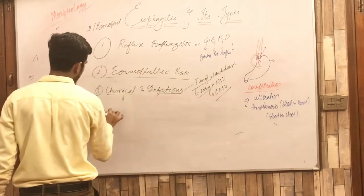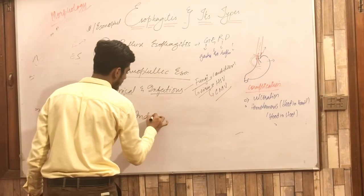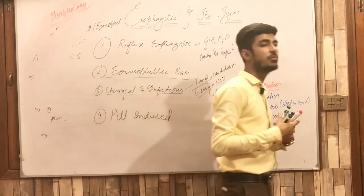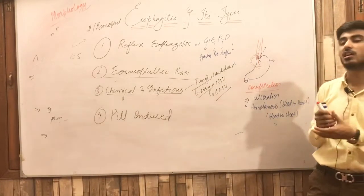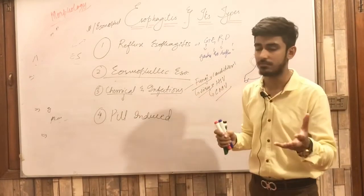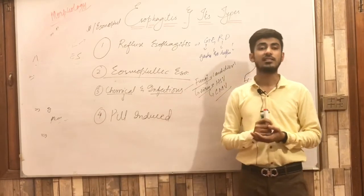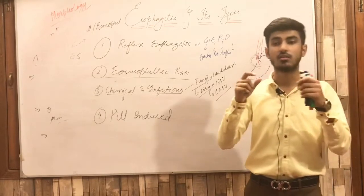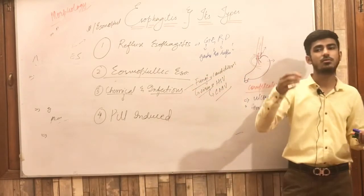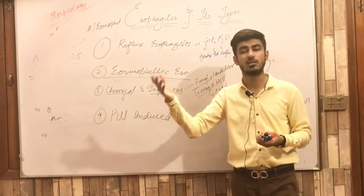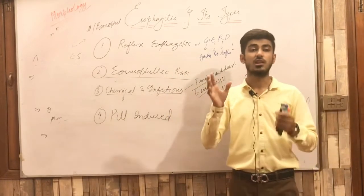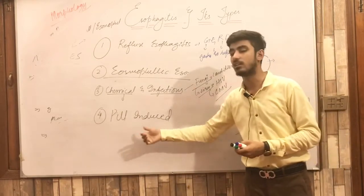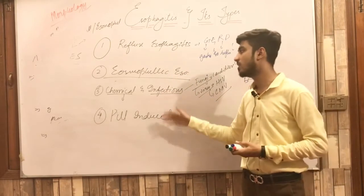The fourth type is pill-induced esophagitis. Normally, drugs or pills we take dissolve in the stomach. However, if a pill accidentally gets stuck in the esophagus — due to a narrowed esophageal lumen or other reasons — and dissolves there instead, it may result in esophagitis. This is called pill-induced esophagitis.